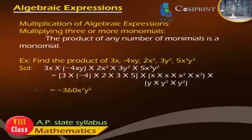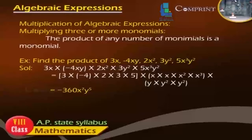Example: Find the product of 3x, minus 4xy, 2x², 3y², and 5x³y². Solution: 3x × (minus 4xy) × 2x² × 3y² × 5x³y² equals 3 × (minus 4) × 2 × 3 × 5 × x × x × x² × x³ × y × y² × y², which equals minus 360x⁷y⁵.